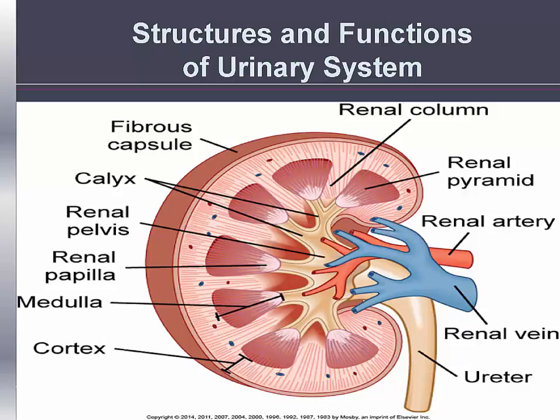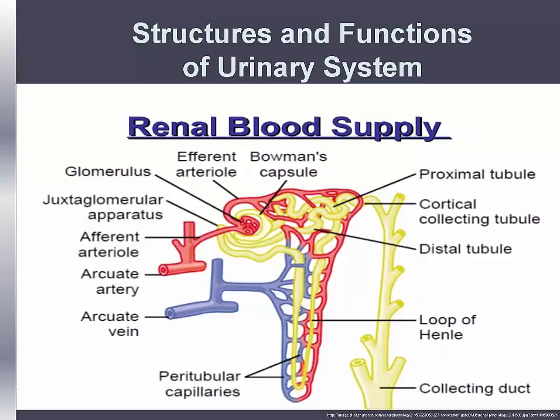The renal pelvis can store a small volume of urine, about 3 to 5 mLs. Each kidney contains approximately 1 million nephrons, and each nephron is composed of the glomerulus, Bowman's capsule, and a tubular system. The tubular system consists of the proximal convoluted tubule, loop of Henle, distal convoluted tubule, and collecting tubules.